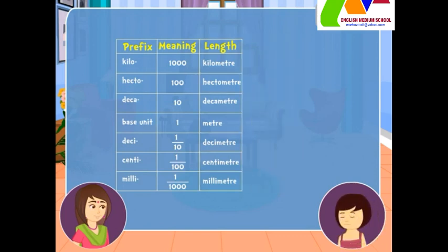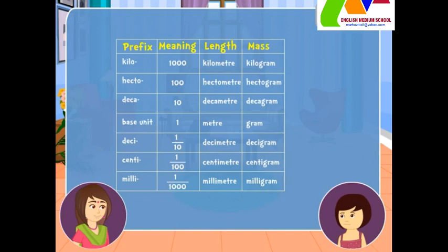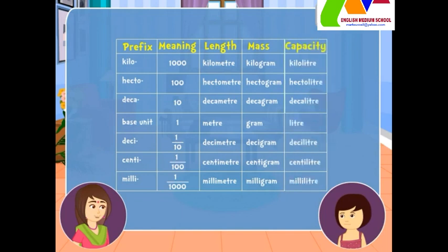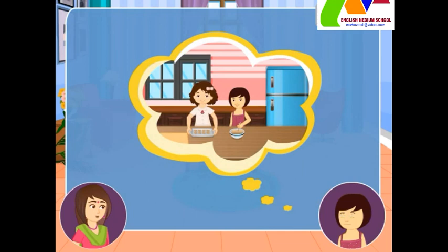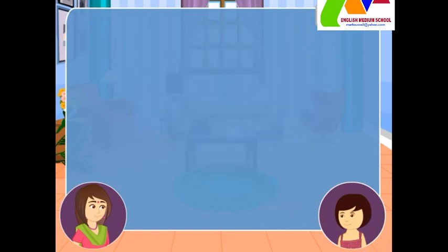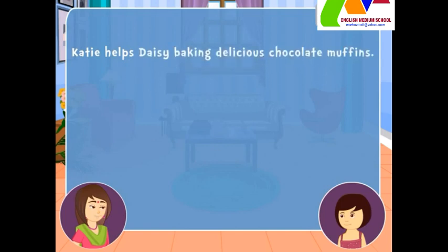Likewise, we can have similar tables for measuring mass and capacity by just changing the base unit to gram and liter. To help remember the order of units, let's make a sentence: Katie helps Daisy baking delicious chocolate muffins. This simple sentence will help us remember the order of units.